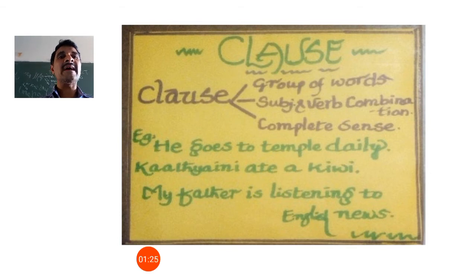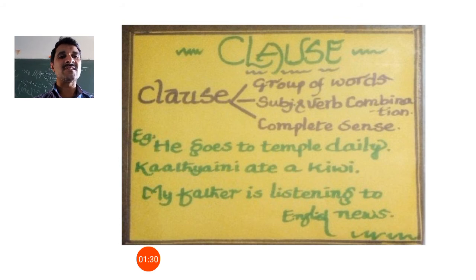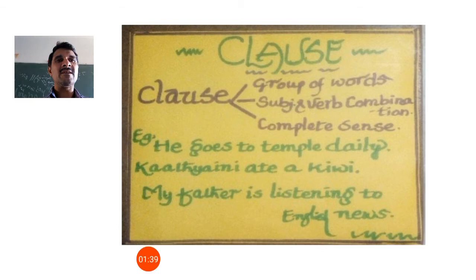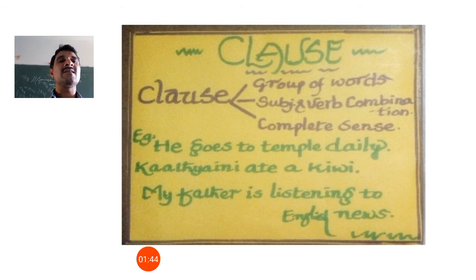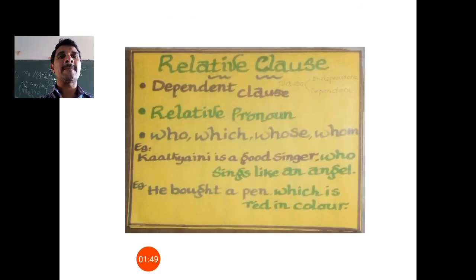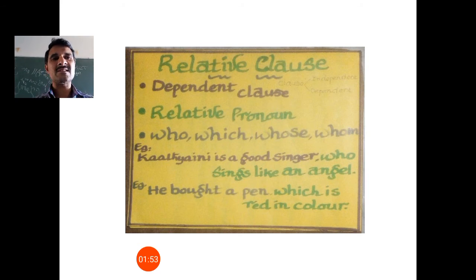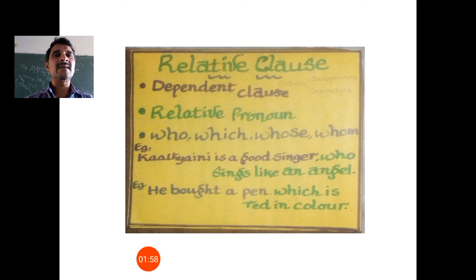Next sentences: 'Katyaini ate a kiwi' and 'My father is listening to English news.' All three sentences fulfill the three elements or conditions. So all three sentences are known as clauses. As we discussed earlier, clauses are of two types: dependent clause and independent clause.